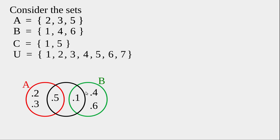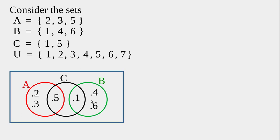Name this circle C. Now we have represented A, B, and C using three circles. To represent the universal set U, we draw it using a rectangle, since the universal set is the superset of all sets under consideration. We draw U so that the rectangle covers all three circles.